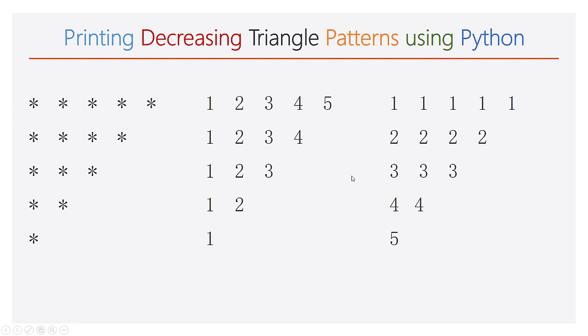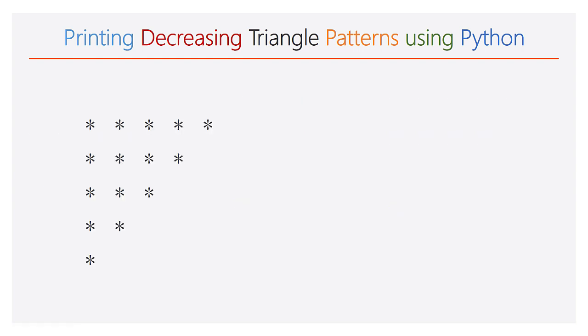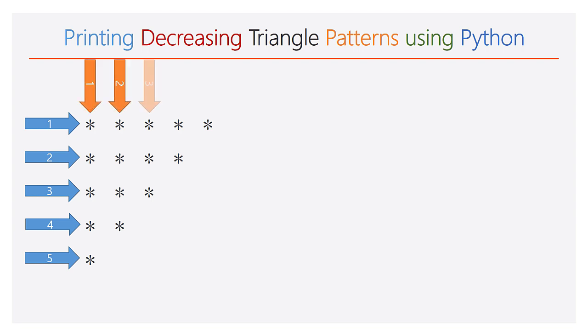Hi viewers, in this video we will discuss how to print a decreasing triangle pattern using Python coding. Let us consider a decreasing triangle that contains only stars. Count the number of rows and the number of columns. The given pattern is 5x5.